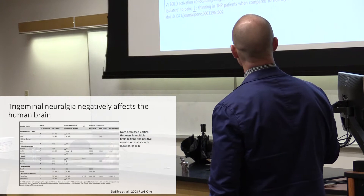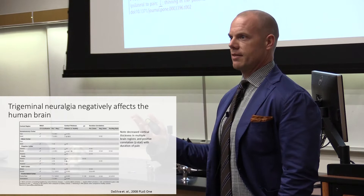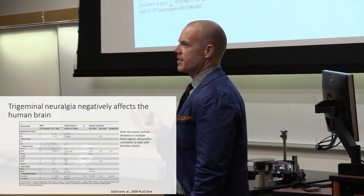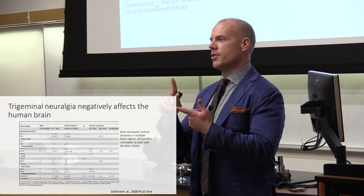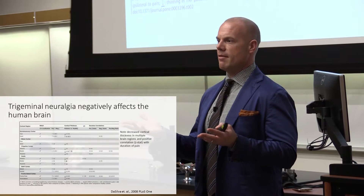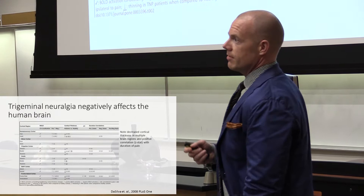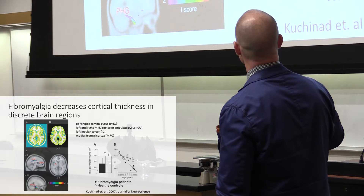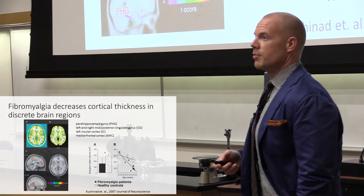There have been studies done in basically any chronic pain disorder you can think of that show essentially the same thing — cortical thinning, not always in the same brain areas, but especially in areas involved in pain processing and pain modulation. Things like the anterior cingulate cortex and the insula, which receive lots of input from the pain system, show cortical thinning in people with chronic pain. This is an example from trigeminal neuralgia — neuropathic pain in the face and head. Same thing in fibromyalgia, where cortical thinning is seen mostly in the hippocampus, cingulate gyrus, insula, and the medial prefrontal cortex — the area mostly involved in cognition and attention.